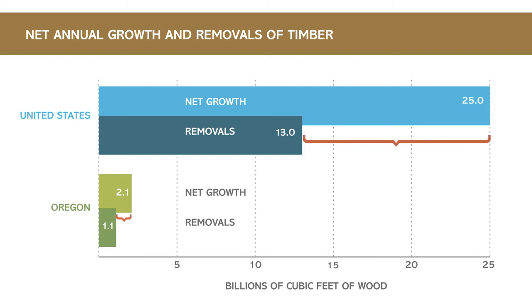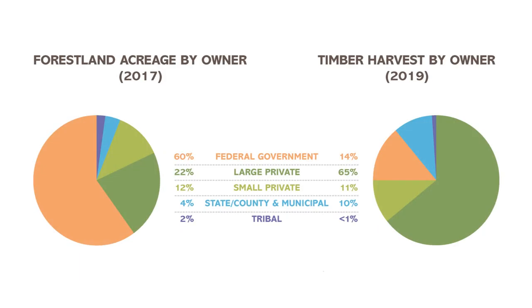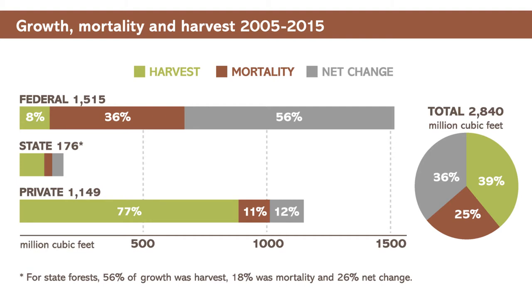This means that our standing timber volume is actually increasing over time. When we talk about timber harvest versus growth as measures of forest sustainability, who owns the forest makes a huge difference. In Oregon, the federal government owns 60% of the forest land and accounts for only 14% of the harvest. Private landowners own 34% of the forest land and produce 76% of the state's timber harvest. Overall, timber harvest accounts for 39% of gross growth, ranging from 8% on federal lands to 77% on private lands.